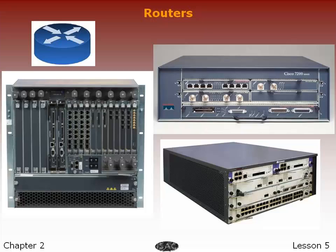Modern high-speed routers are highly specialized computers with extra hardware added to speed both common routing functions such as packet forwarding and specialized functions such as IPsec encryption. There is substantial use of Linux and Unix software-based machines running open-source routing code for research and other applications. Cisco's operating system was independently designed, while major router operating systems such as those from Juniper Networks and Extreme Networks are extensively modified versions of Unix software.